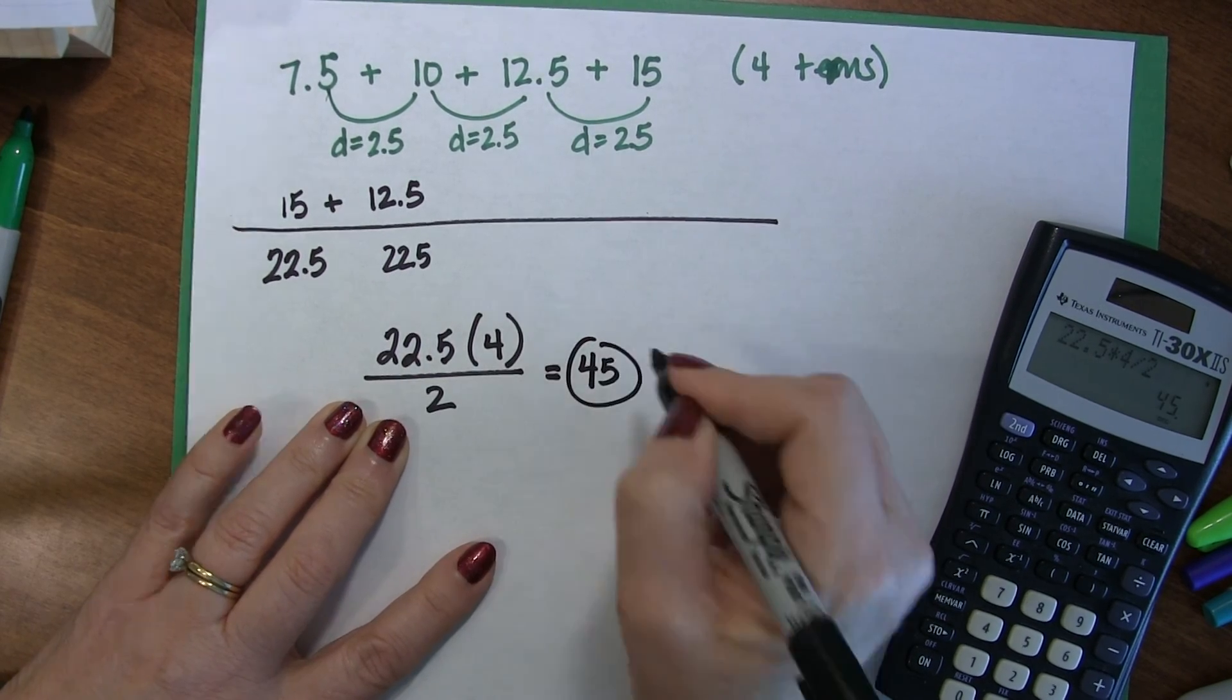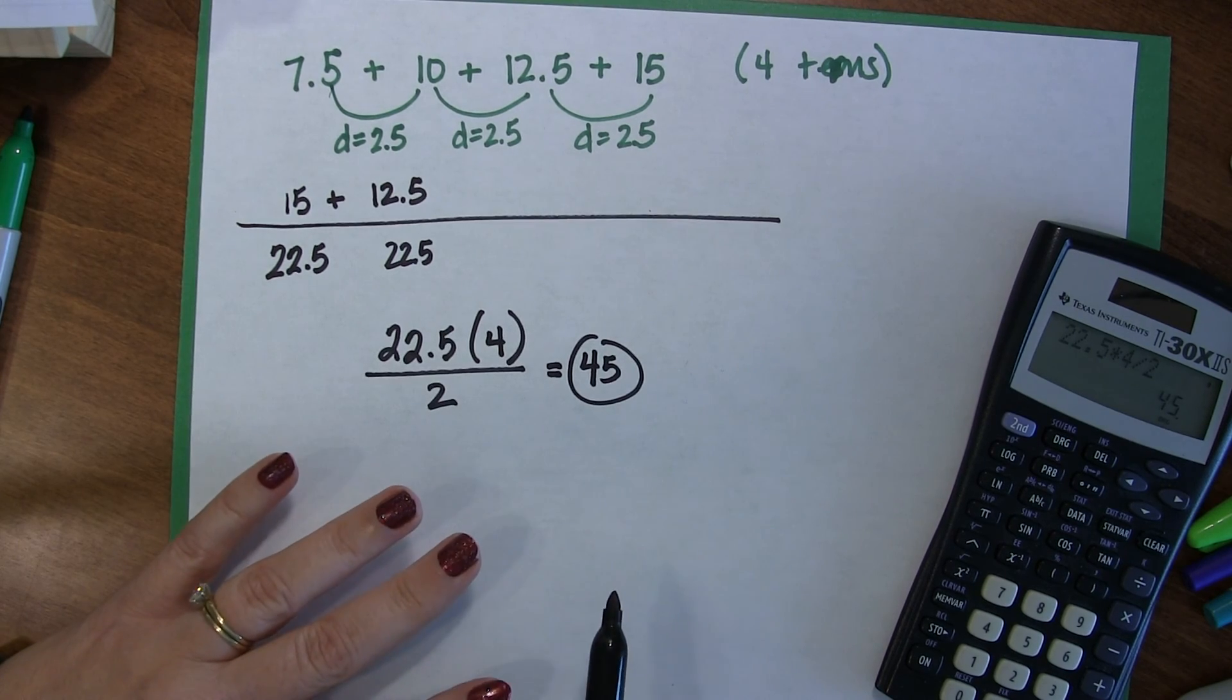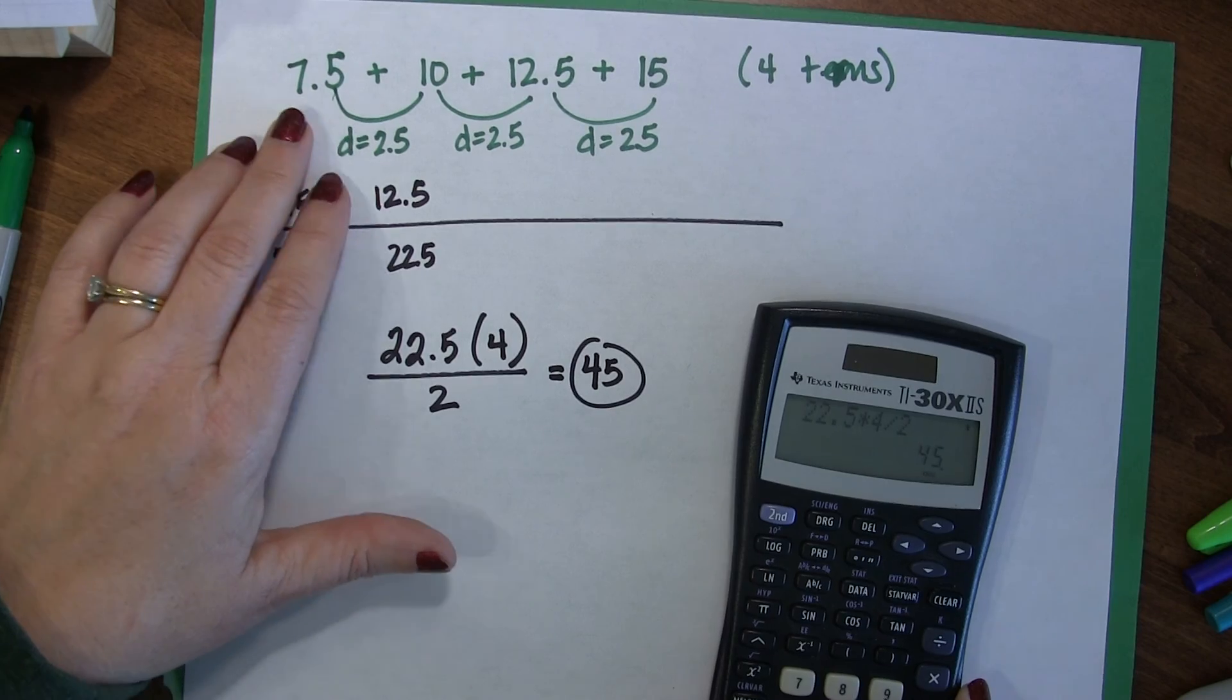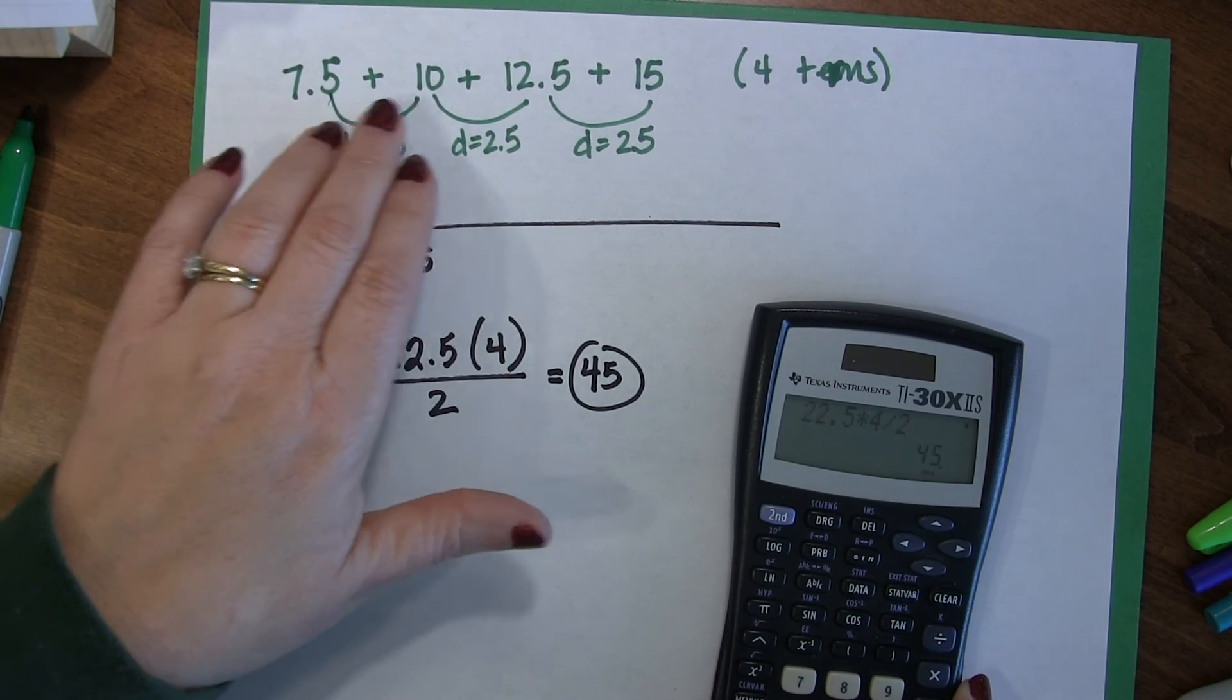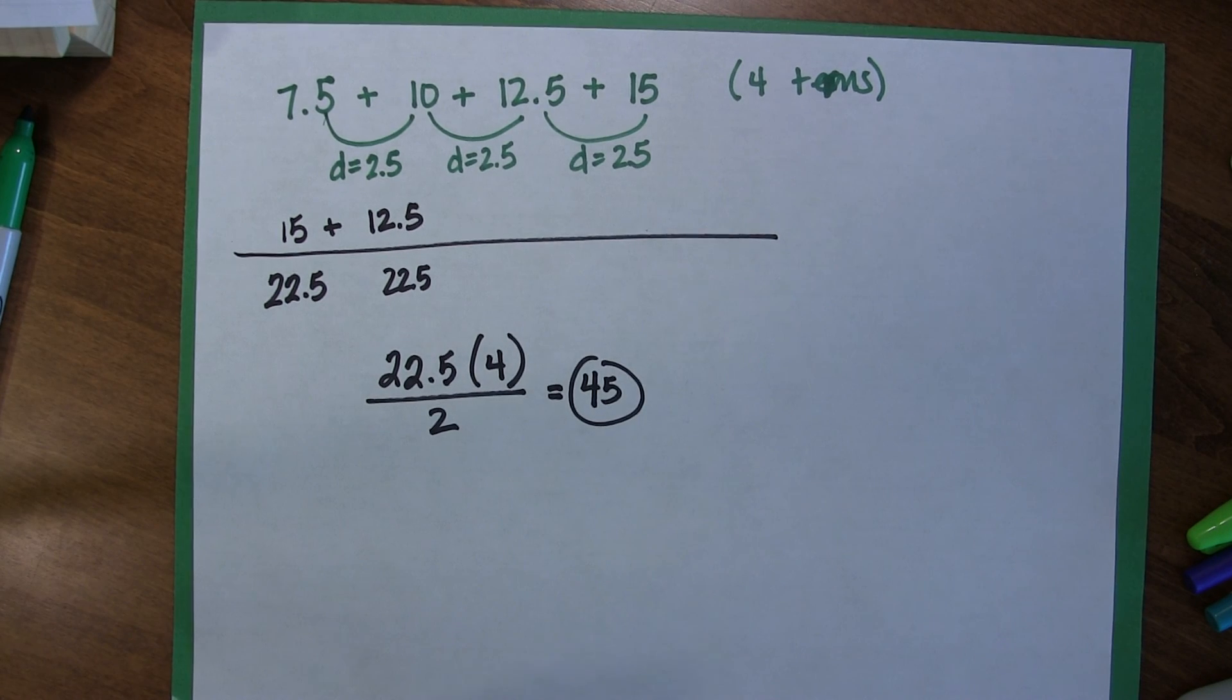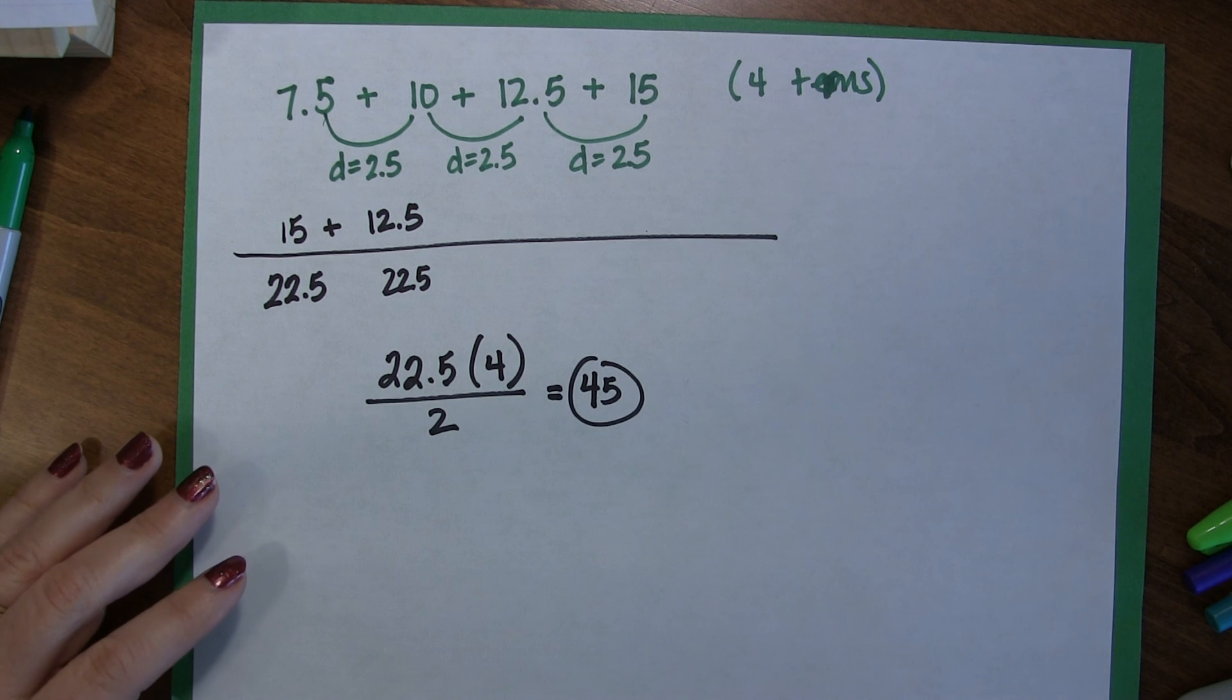Oh, look at that. It's the same number as we started with. Well, that's funny. Okay, so the sum of that equation is 45. And if you don't believe me, you can take out your handy-dandy calculator and you can put in 7.5 plus 10 plus 12.5 plus 15, and you will get 45. But you can do this all day long, and it will work out every single time. So that seems like something useful to know.